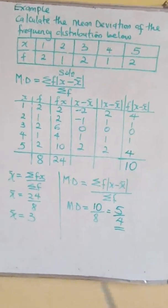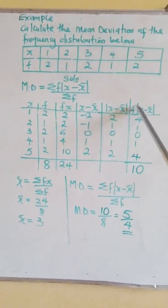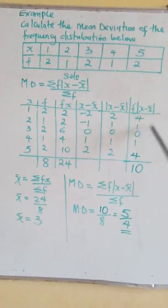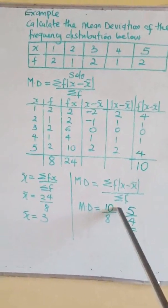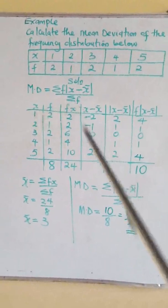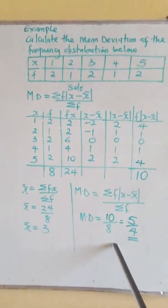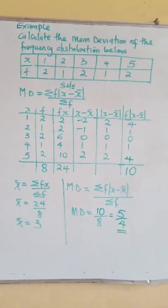Now the summation of f multiplied by the absolute value is 10. Insert it in the formula: it will give you 10 over 8, your total frequency, that will give you 10 divided by 8 to give you 5 over 4.